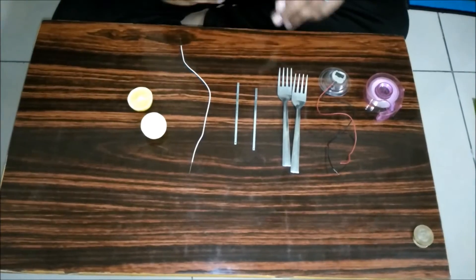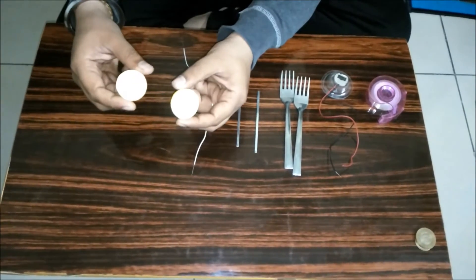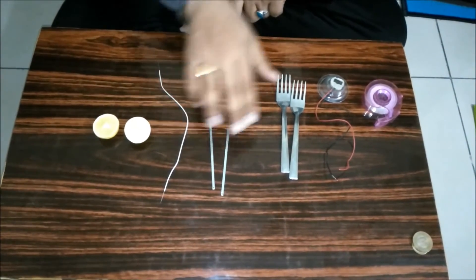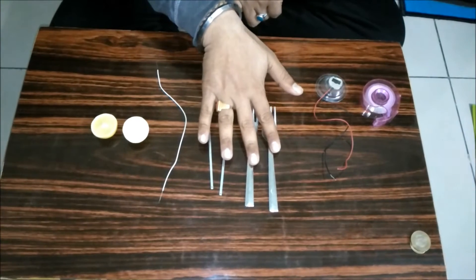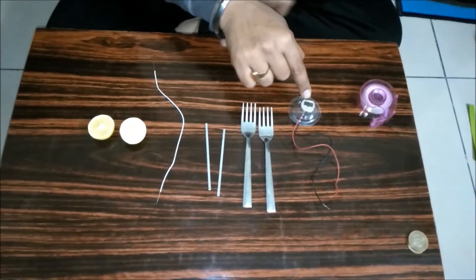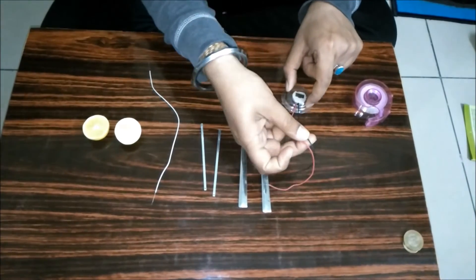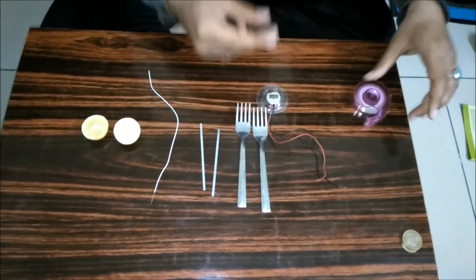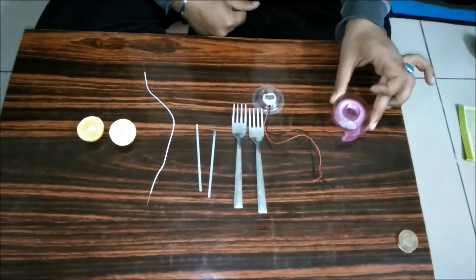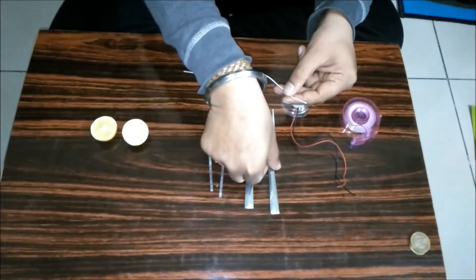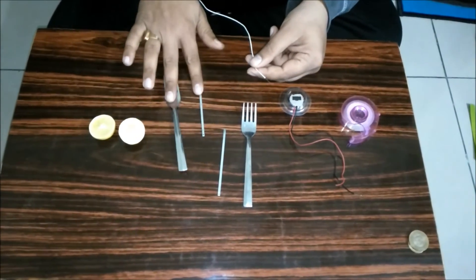For this experiment we need two halves of lemon, one connecting wire, two zinc strips, two steel forks, one digital wristwatch which is purchased from the market, which is connected with two wires, and paper tape. Now for this experiment we need to connect this fork with one zinc strip.